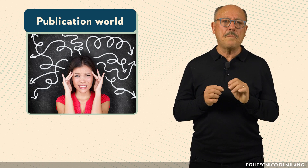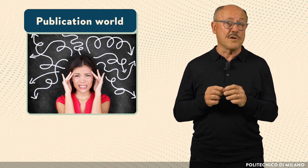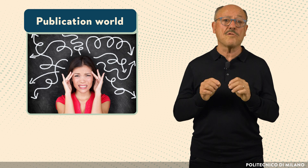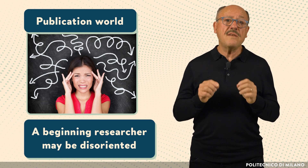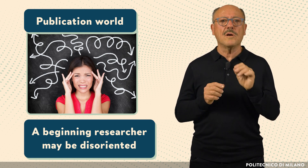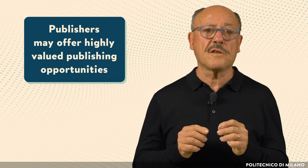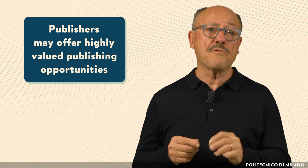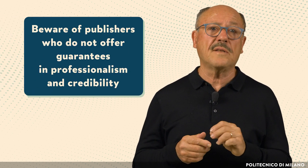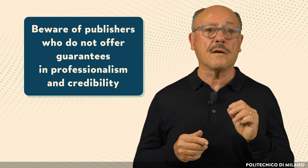The picture I gave of the publication world shows that researchers have plenty of choices for the venues where their research results may be published. A beginning researcher may even be disoriented when they have to choose among the many opportunities that are offered to them. Earlier in this lecture I mentioned publishers which offer a variety of choices, some of which are highly valued by the respective research communities. There are many others not mentioned, in other fields of research, however there are also many that do not offer the necessary guarantees in terms of professionalism and credibility.